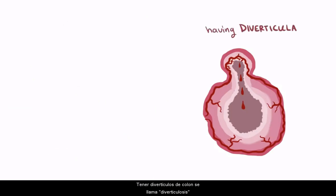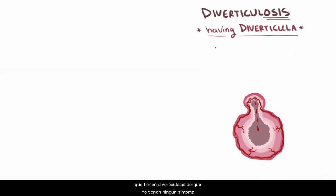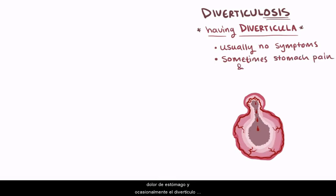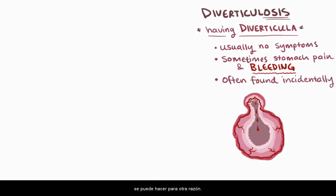Having diverticula in the colon is called diverticulosis, and most of the time people won't even know they have it because they don't have any symptoms. Sometimes people with diverticulosis have vague stomach pain, and occasionally the diverticula might bleed, but most of the time, when there are no symptoms, diverticulosis is discovered through a colonoscopy or CT scan done for another reason entirely.